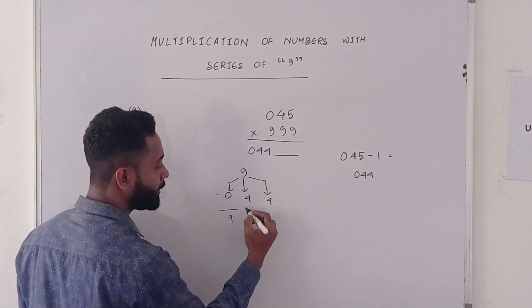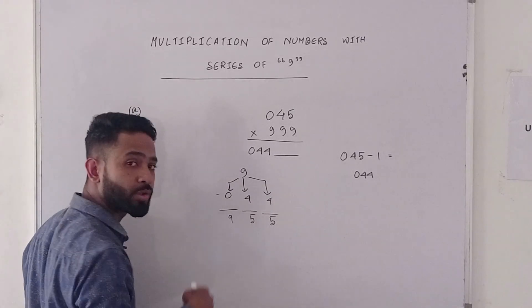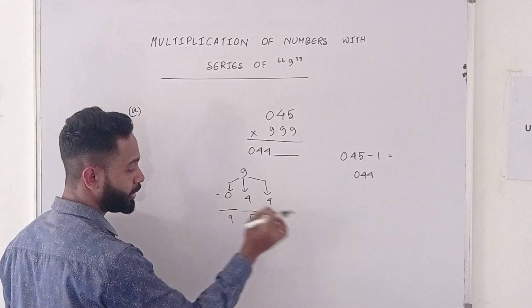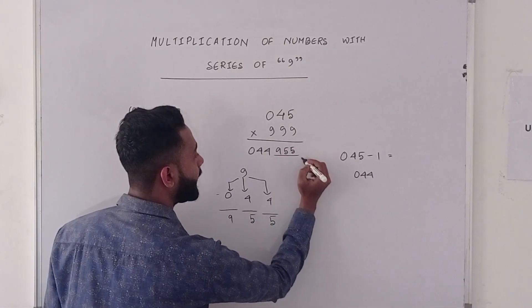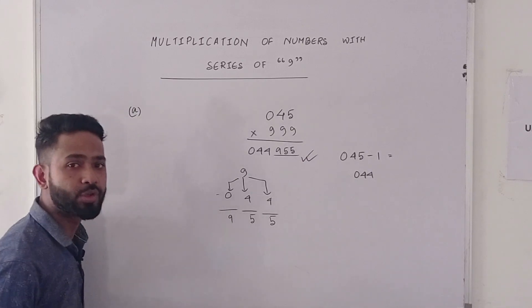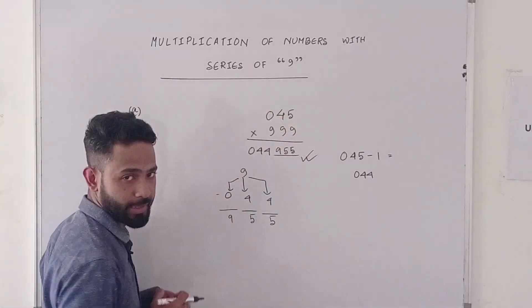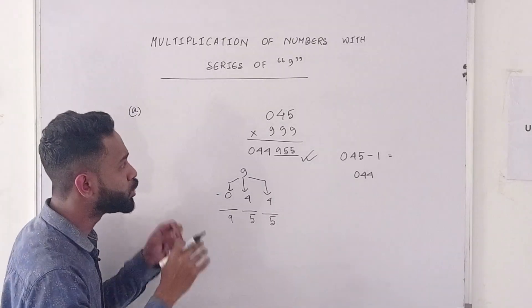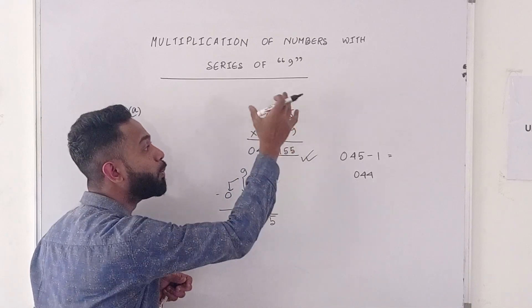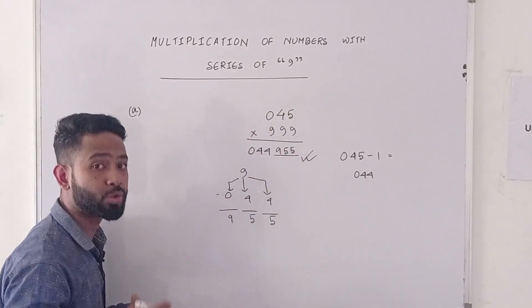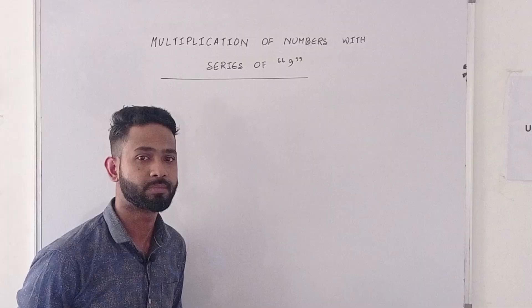So we go: 9 minus 4 is 5, 9 minus 4 is 5. So the next three digits will be 9, 5, 5. And hence this is our answer. This is how you can use the technique for a multiplier having fewer digits than the series of 9s.